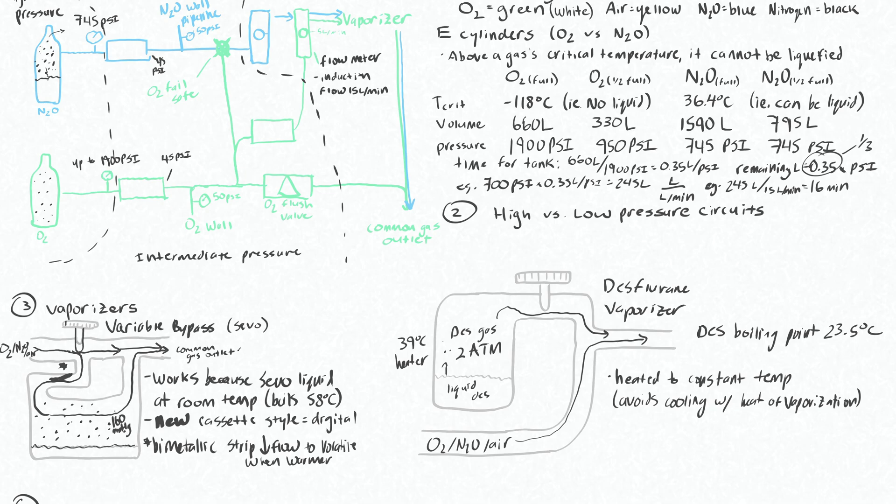This heat of vaporization that we talked about for des is of course also happening in the sevo vaporizer. When the sevo goes from the liquid to the gas phase, this temperature would drop a little bit, but then it is compensated by this bi-metallic strip.